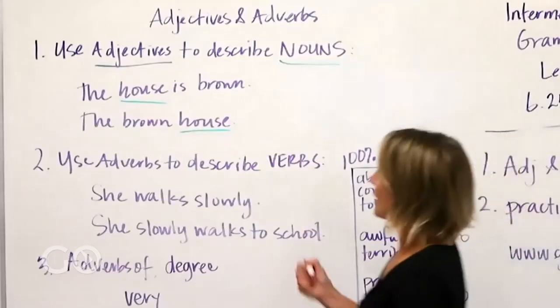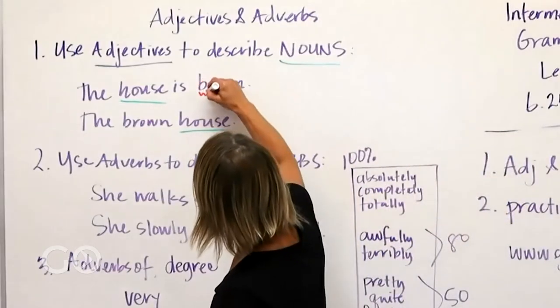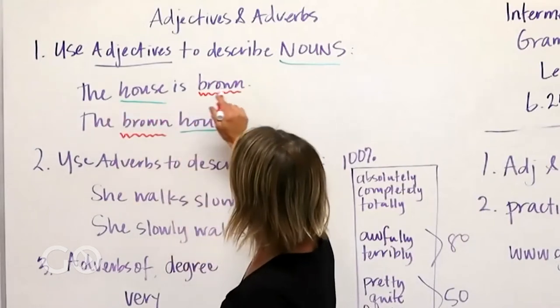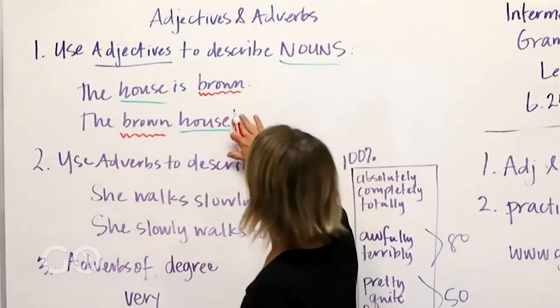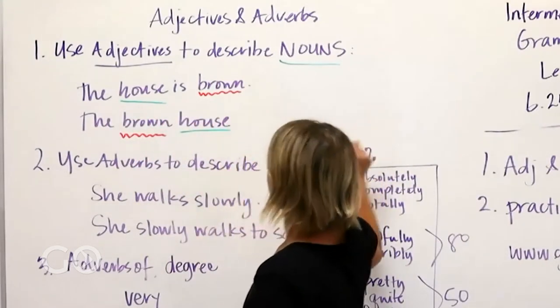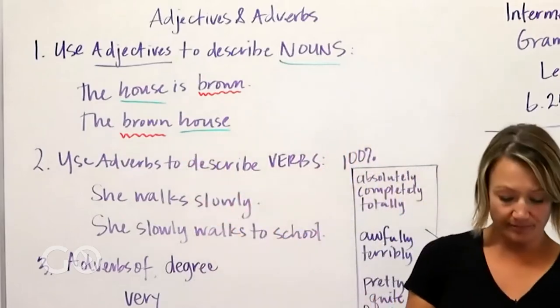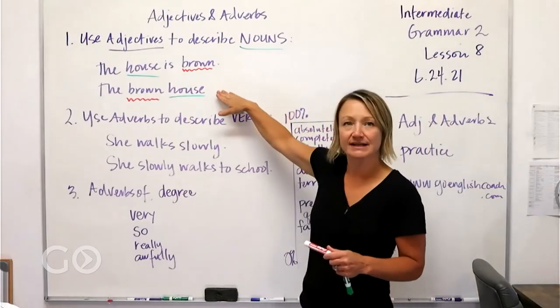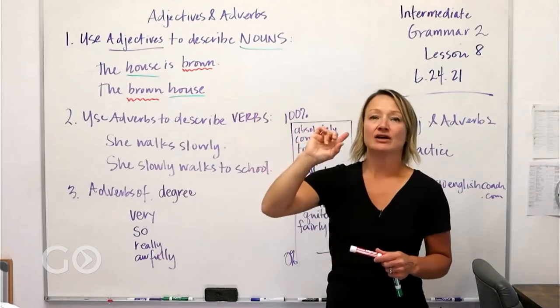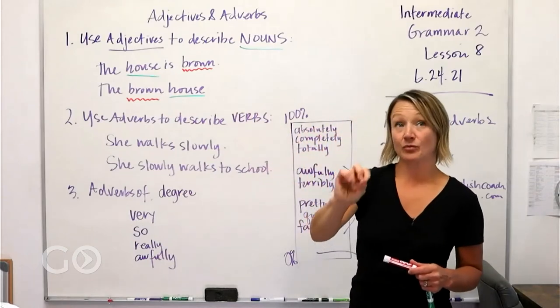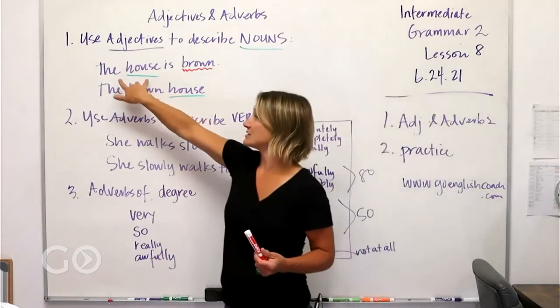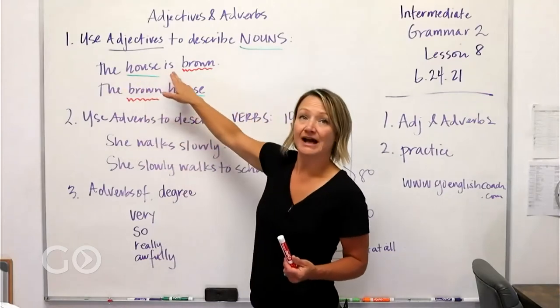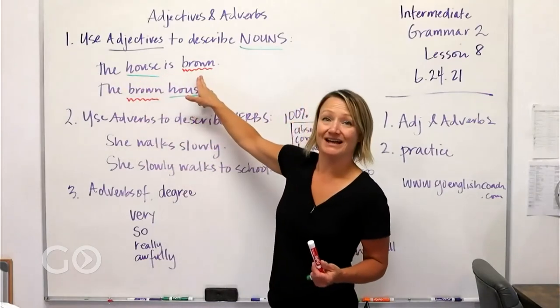Let's just underline both of those and make those both green. All right, so now your adjectives—brown is your adjective. The house is brown, the brown house. You know, and then you need something else. This is not a complete sentence. What I wanted to show you with giving you two examples like this is that you can write them two different ways.